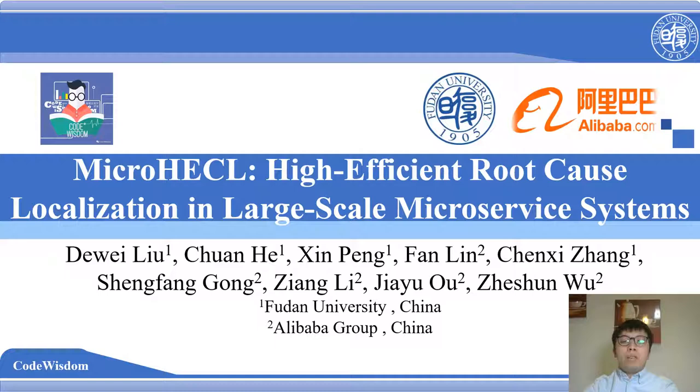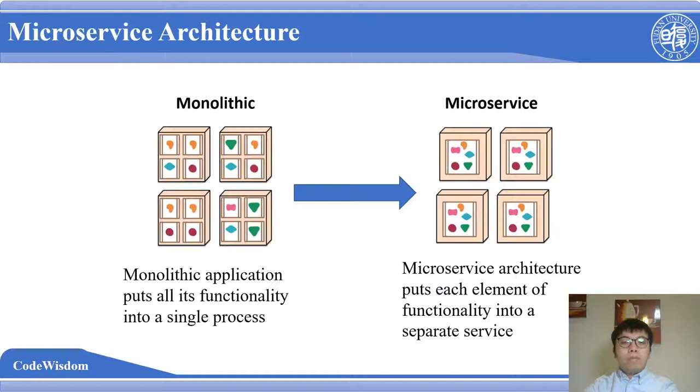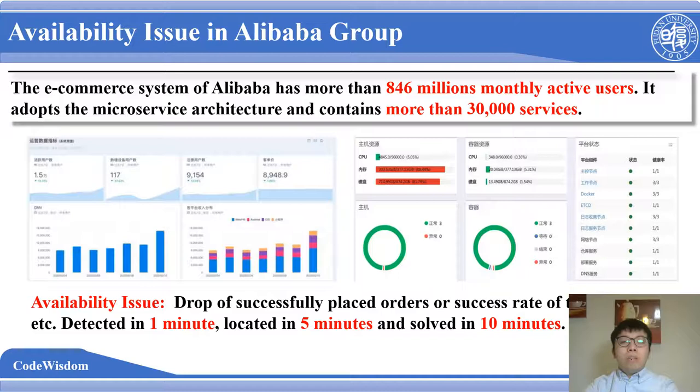The first part is the background of our work. As we know, the microservice architecture has been the latest trend in building cloud-native applications, and more and more companies have chosen to use it. In Alibaba group, Alibaba adopts the microservice architecture and contains more than 13,000 services. As the carrier of the business, the system needs to ensure high availability. The availability issue in Alibaba indicates problems with the running of business, for example, the drop of successfully placed orders or success rate of transactions.